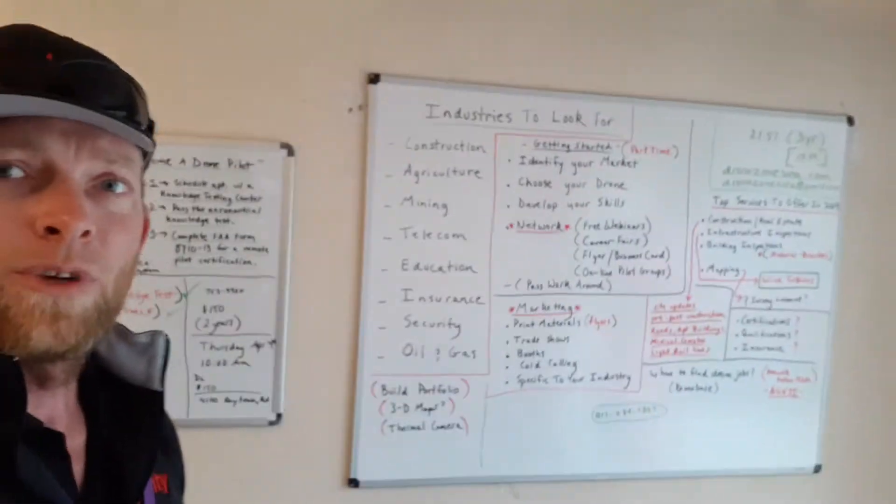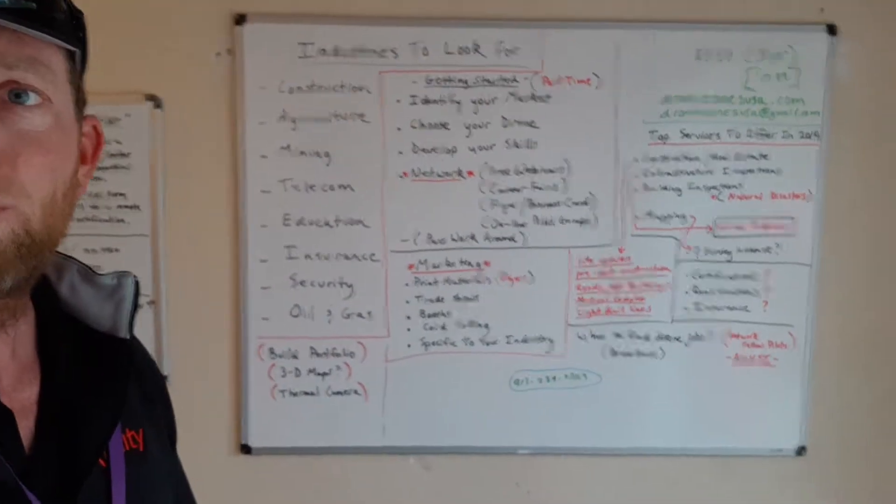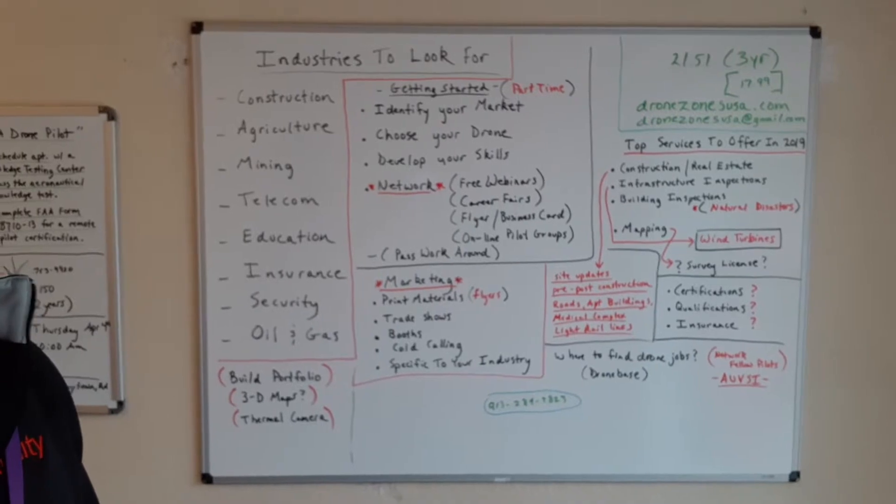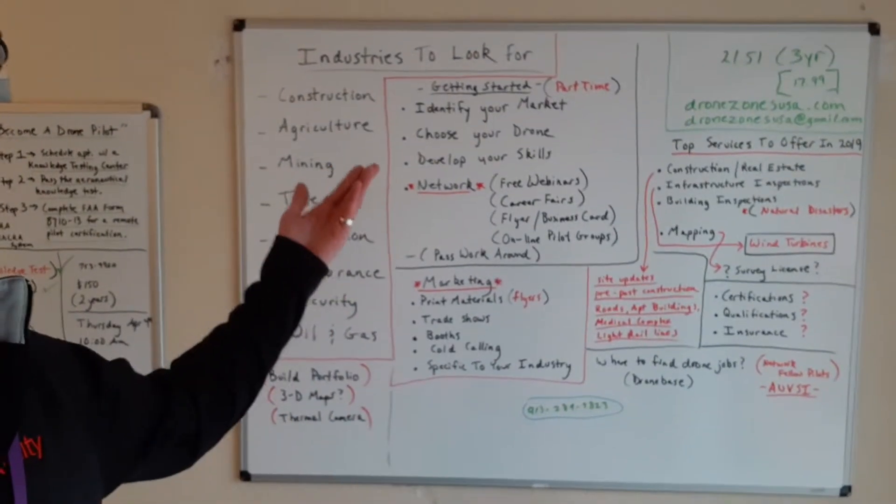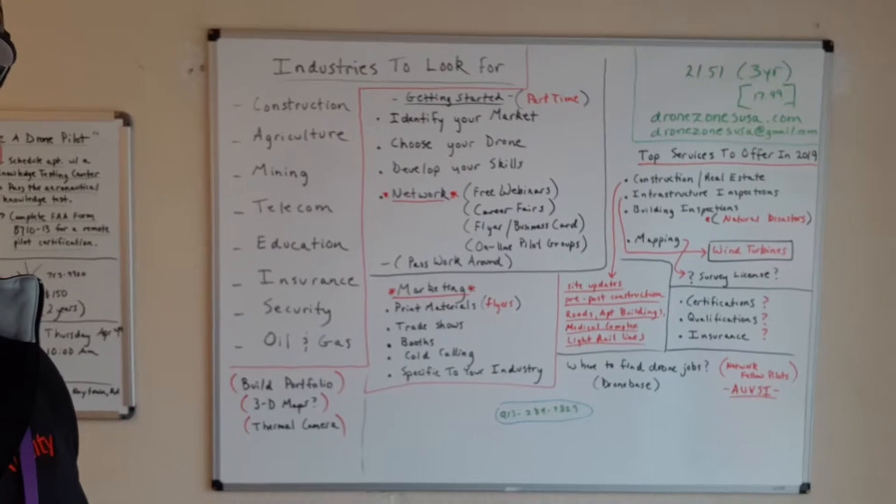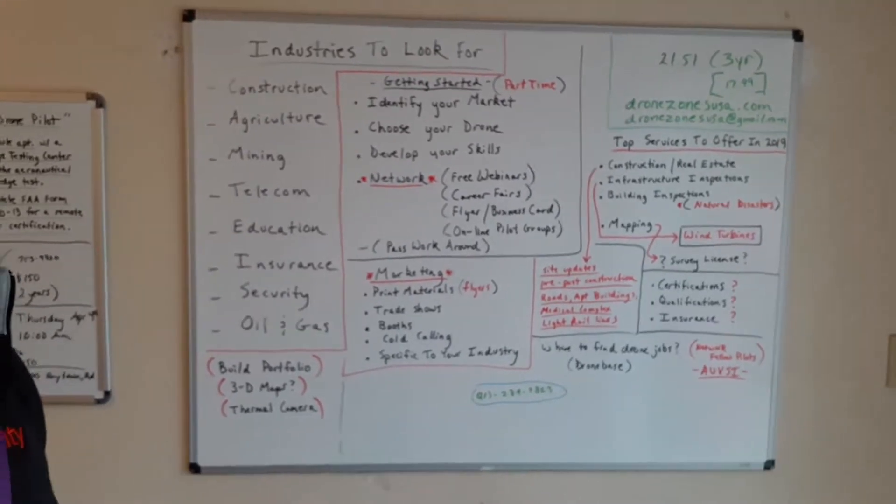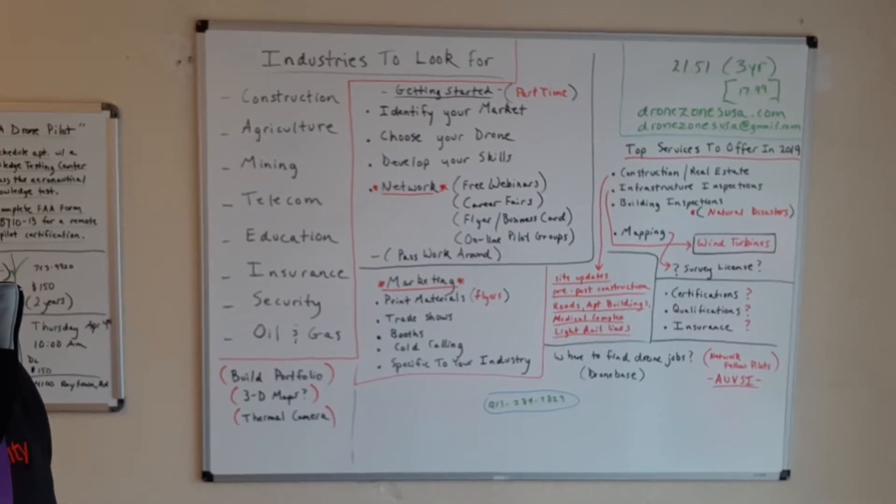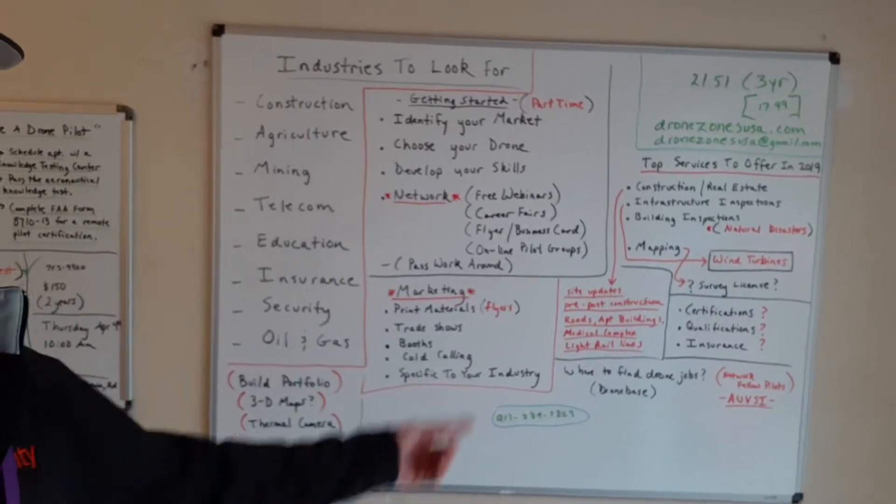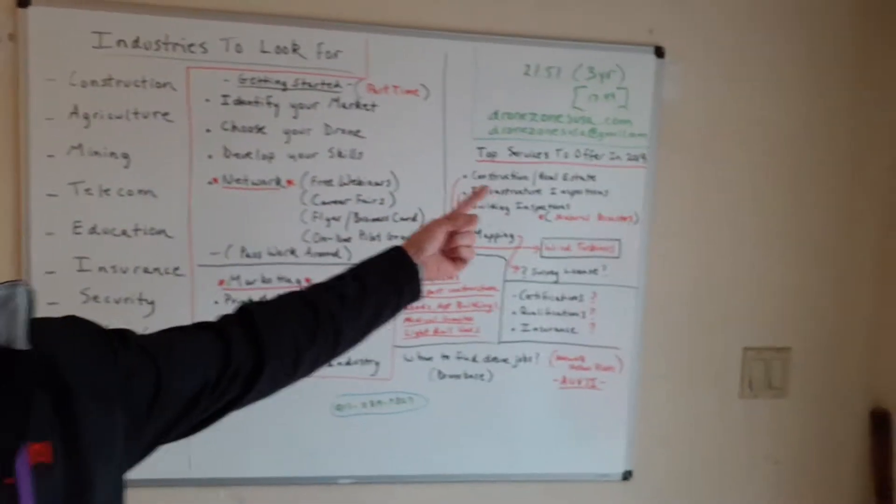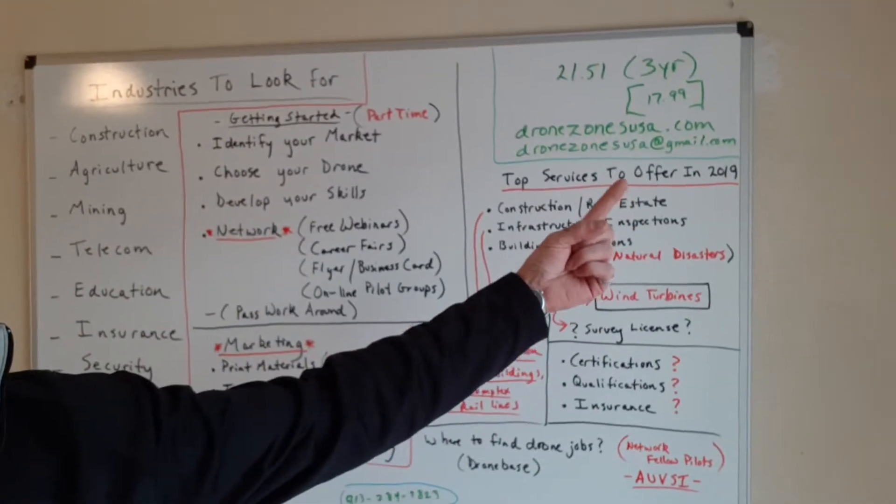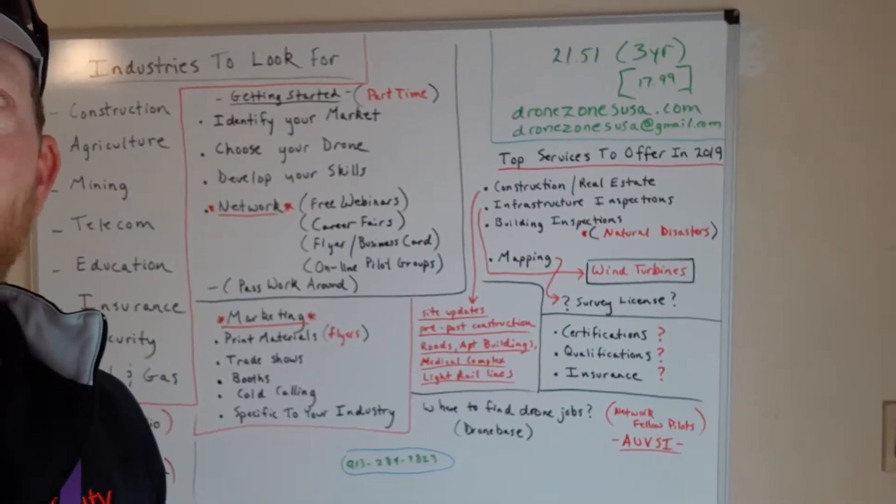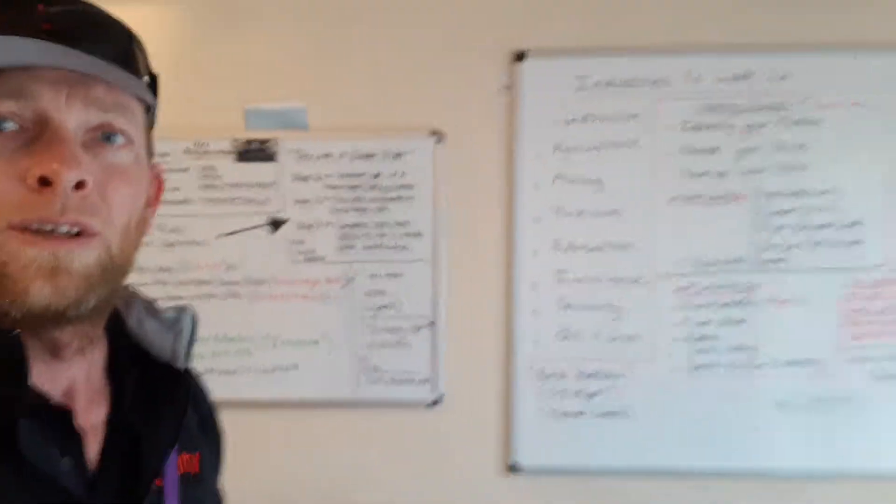Once I did that, I got another whiteboard, which I find very helpful. Here you can see I've started to outline different ideas and established some industries that are looking for the services I'm providing. First, I bought a domain name from GoDaddy - dronezonesusa.com. I still have yet to build the website.